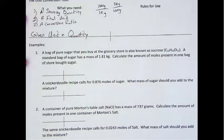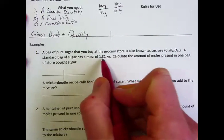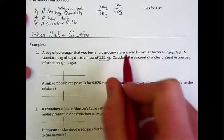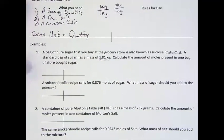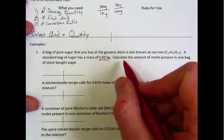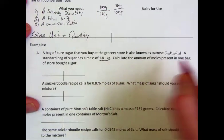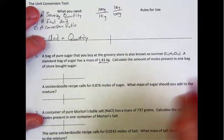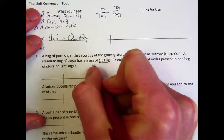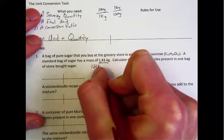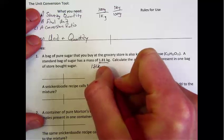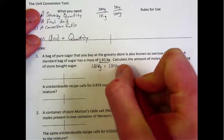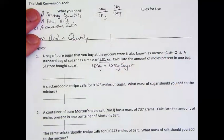Now the issue with this sample problem though is that when we're using our conversion ratio in order to convert between moles and mass, we use molar mass and molar mass is recorded in grams per mole. So that means that we need to convert 1.81 kilograms to grams. So that equals 1,810 grams of sugar.